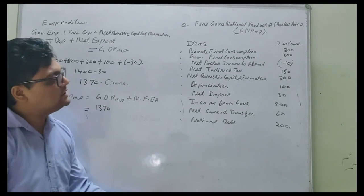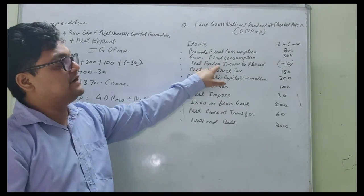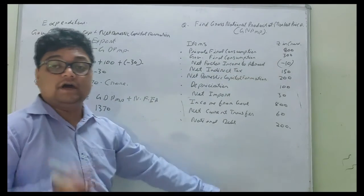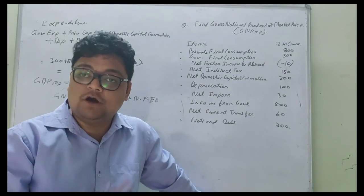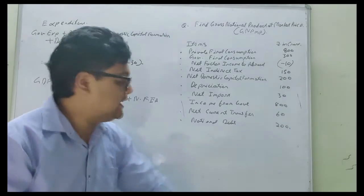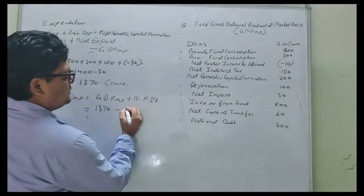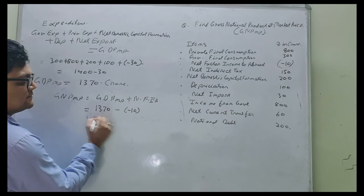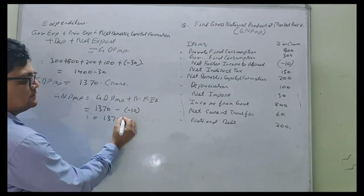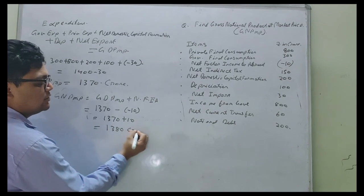Net factor income from abroad in the question is not given, but it is given net factor income to abroad. As you all know, that to abroad is always minus and from abroad will be added. So we will minus net factor to abroad, which is minus 10. So minus minus become plus. It will become 1380 crore.